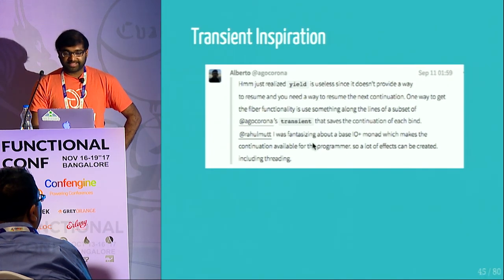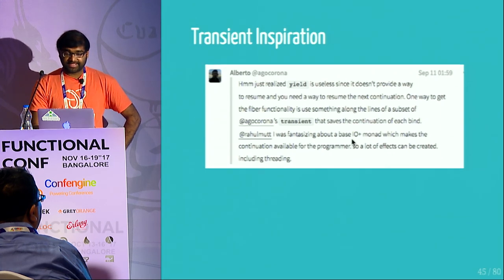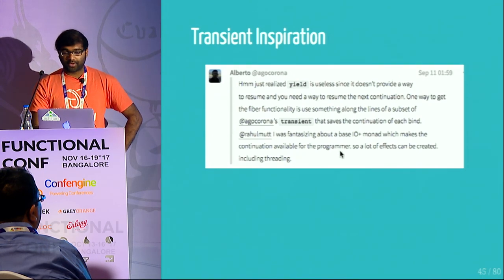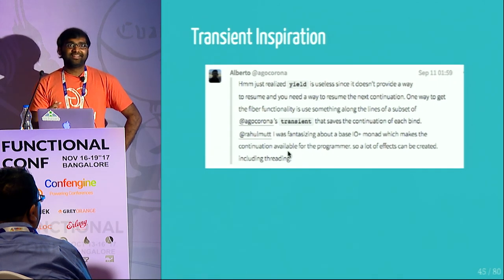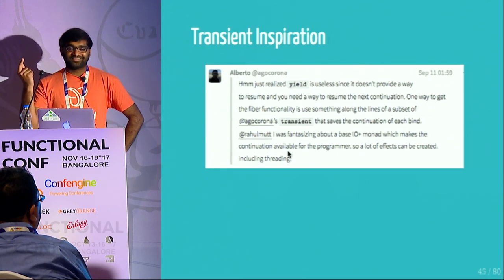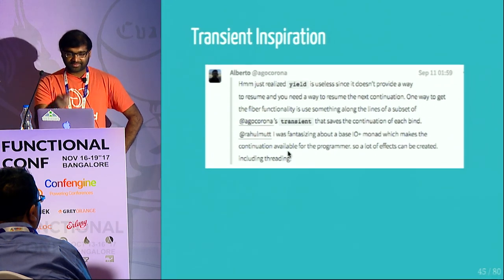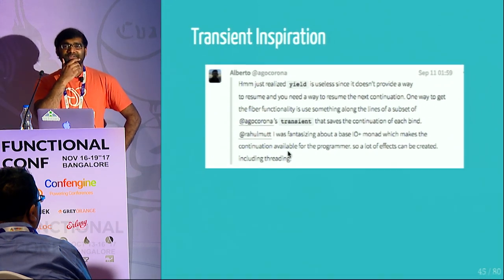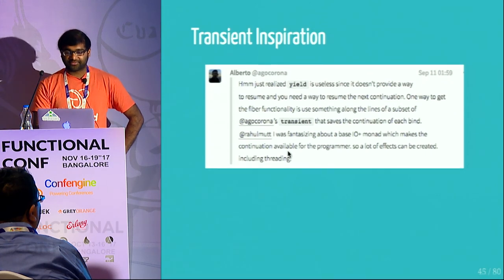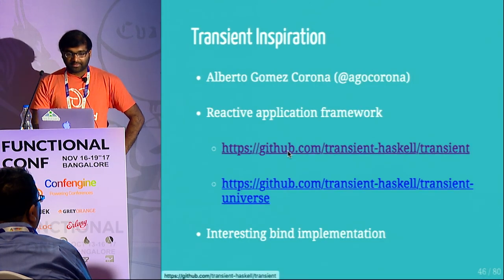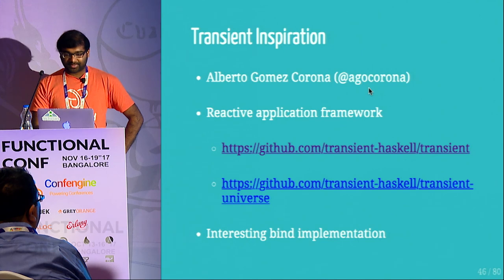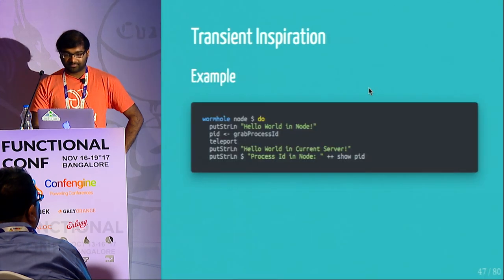It all started in our Gitter channel for ETA when a guy named Alberto said one thing. Alberto is the author of the Transient Framework — a framework for reactive programming in Haskell with a very interesting implementation. He commented: 'I was fantasizing about a base IO plus monad which makes the continuation available for the programmer, so a lot of effects can be created, including threading.' Something about what he said instantly sparked a light bulb and I started hacking. I think it was on a Wednesday or Thursday, and by that weekend I had a working implementation of fibers.